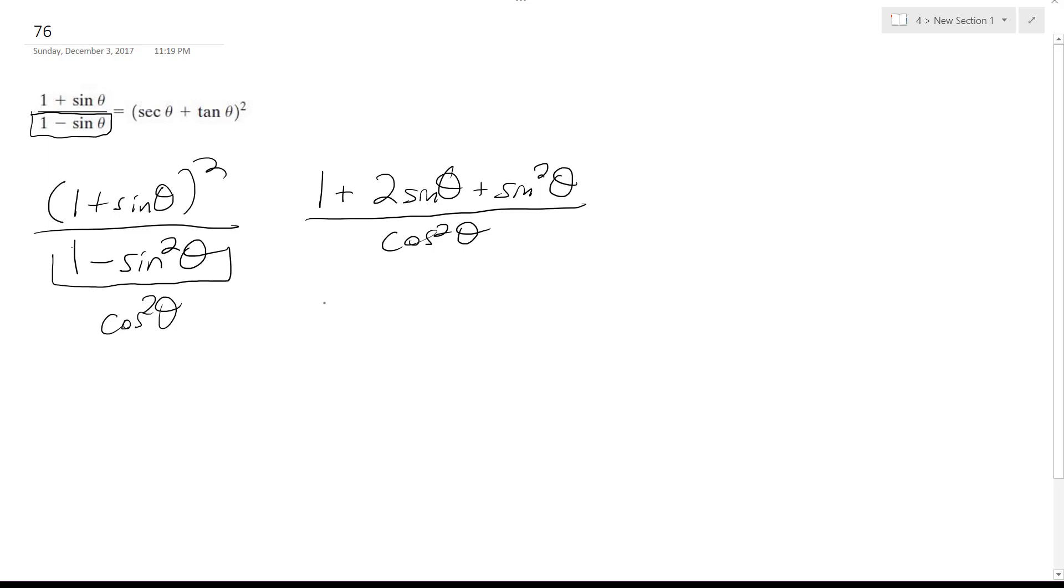So let's see here. And if you rewrite this as 1 over cosine squared theta plus 2 sine theta... was that 2 sine theta? It was 2 sine theta.